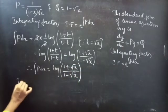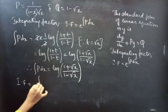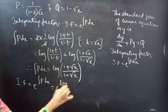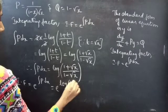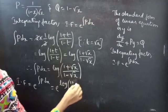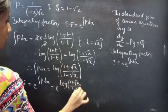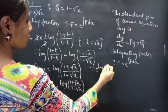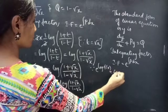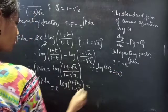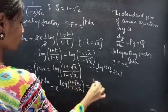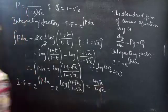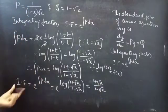Now coming to the integrating factor. The integrating factor is e to the power of integral P dx, which equals e to the power of log|(1+√x)/(1−√x)|, and this simplifies to (1+√x)/(1−√x).